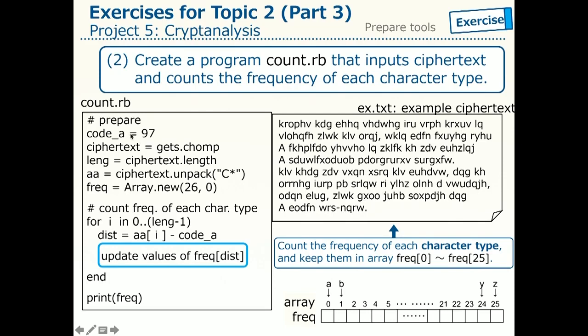We will read an input string into the array ciphertext and then compute its length to the variable length. Then, we transform characters in the ciphertext to the corresponding code numbers that are stored in array AA.